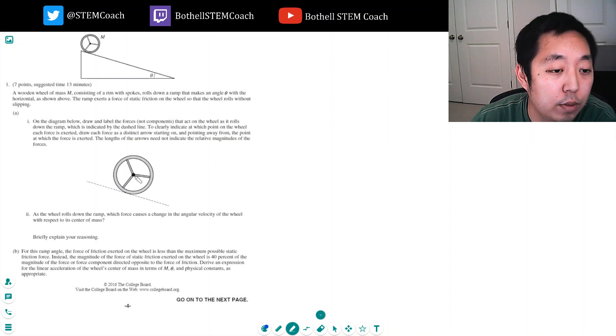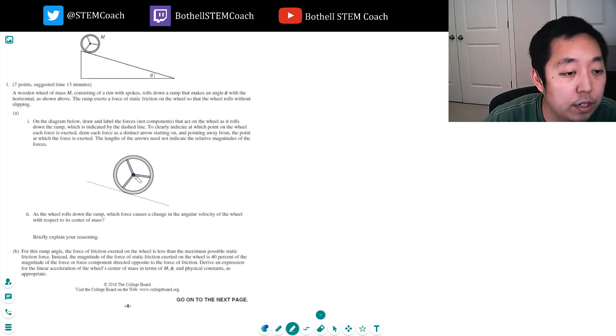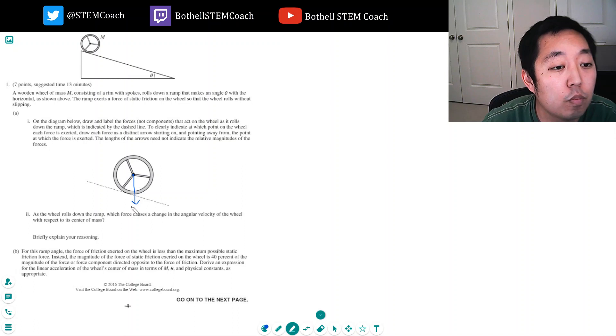Okay, so what's acting on this thing? Well, gravity is pretty much always here and it always acts at the center of mass. So the center of the wheel is where gravity is, we'll say force of gravity, which equals mg.